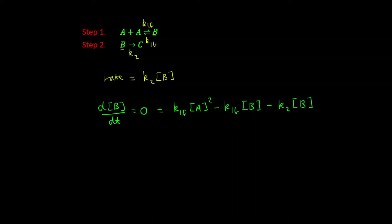And now we can solve this equation for B. So if we subtract the first term from both sides and multiply through by negative 1, what we get is K1F by the concentration of A all squared is equal to K1B plus K2, and that's multiplied by the concentration of B.